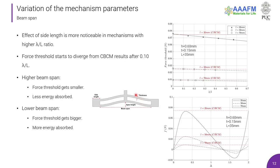Now talking about the beam span, the effect of the side length is more noticeable in mechanisms with higher lambda over L ratio. As we can see here, after the value of 0.10 of the ratio, the force threshold of the mechanism begins to diverge from the expected numerical results of the CBCM. This distance is more evident in mechanisms with lower beam span. For higher values of the beam span, the force threshold gets smaller and less energy is absorbed.